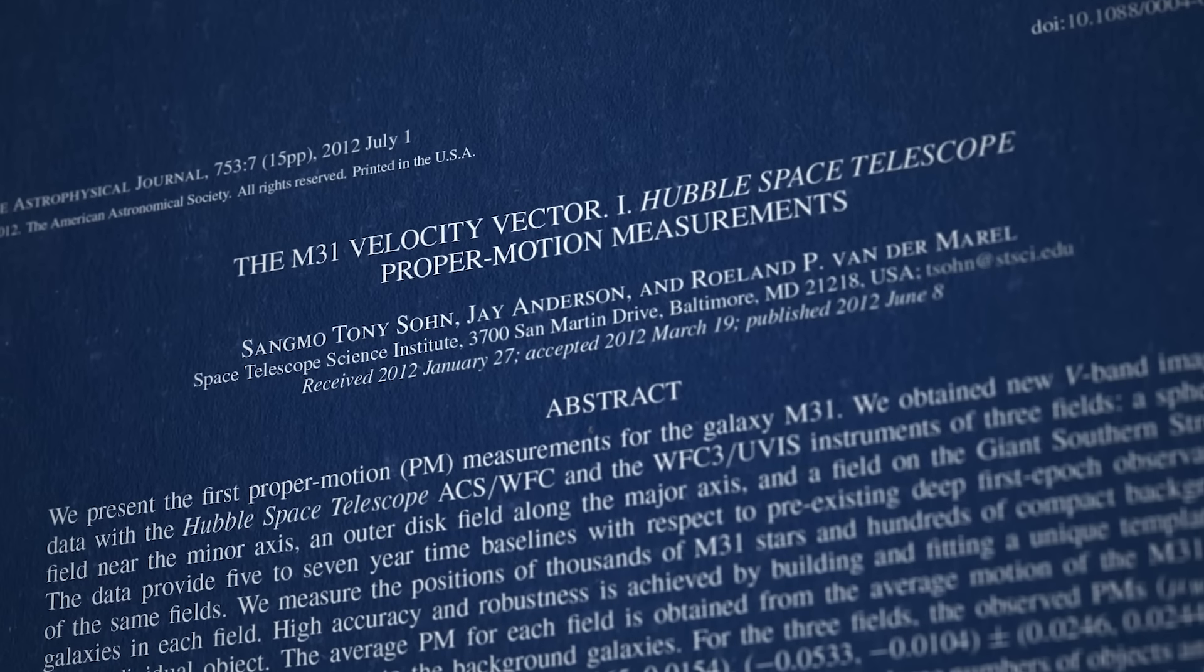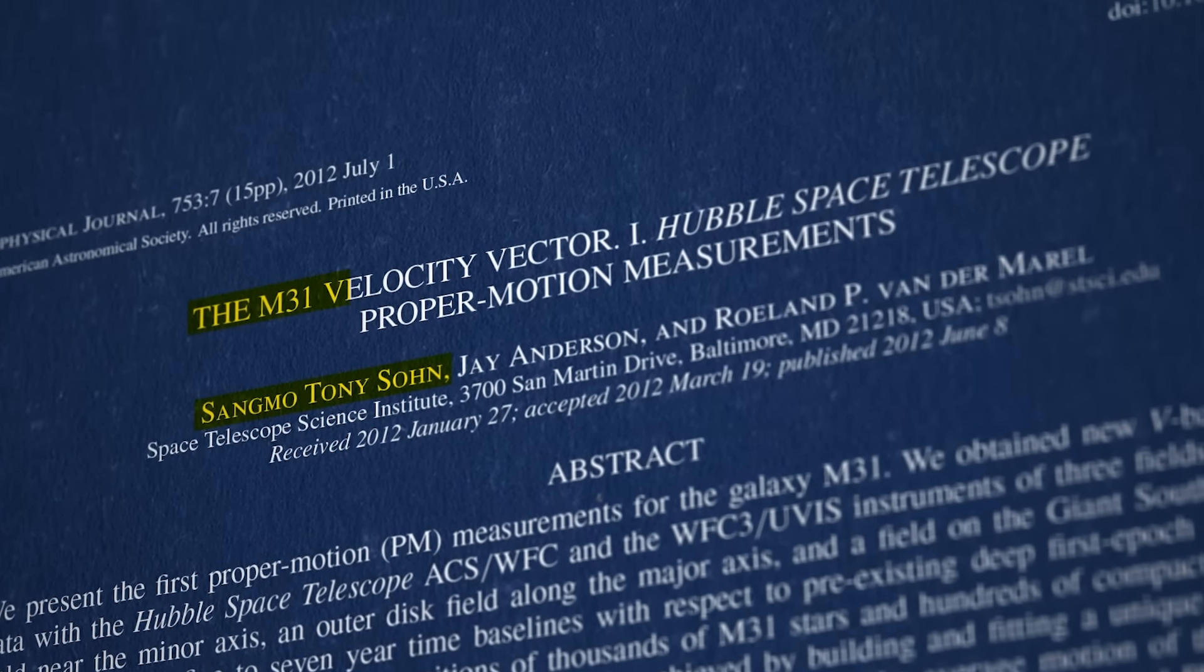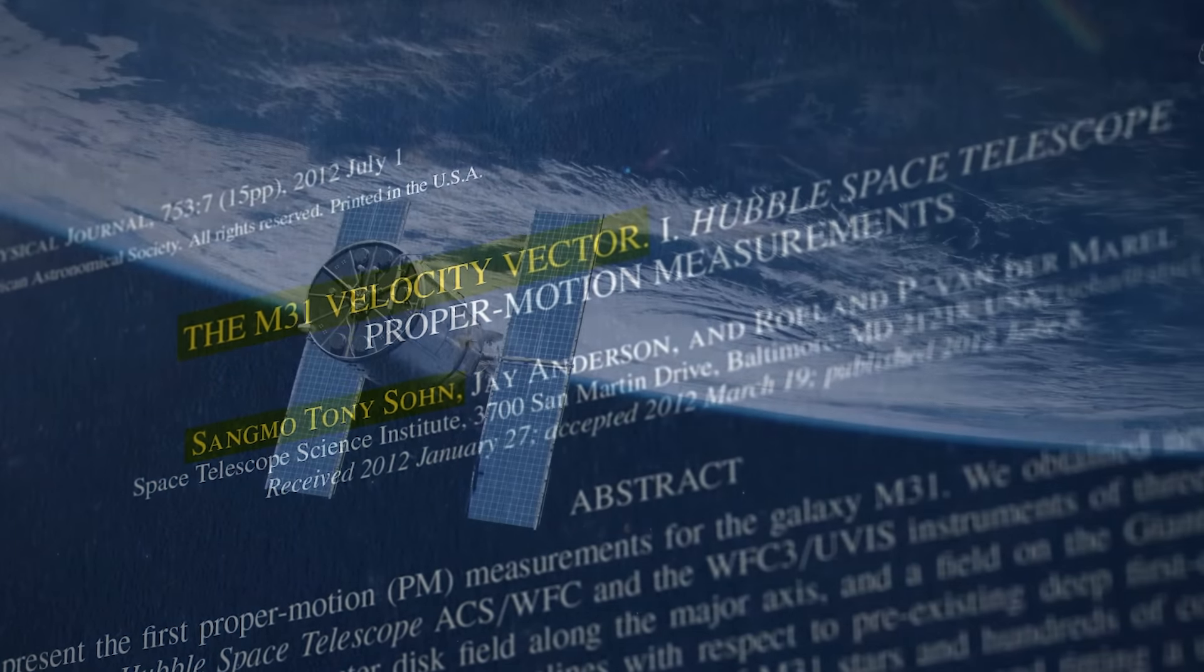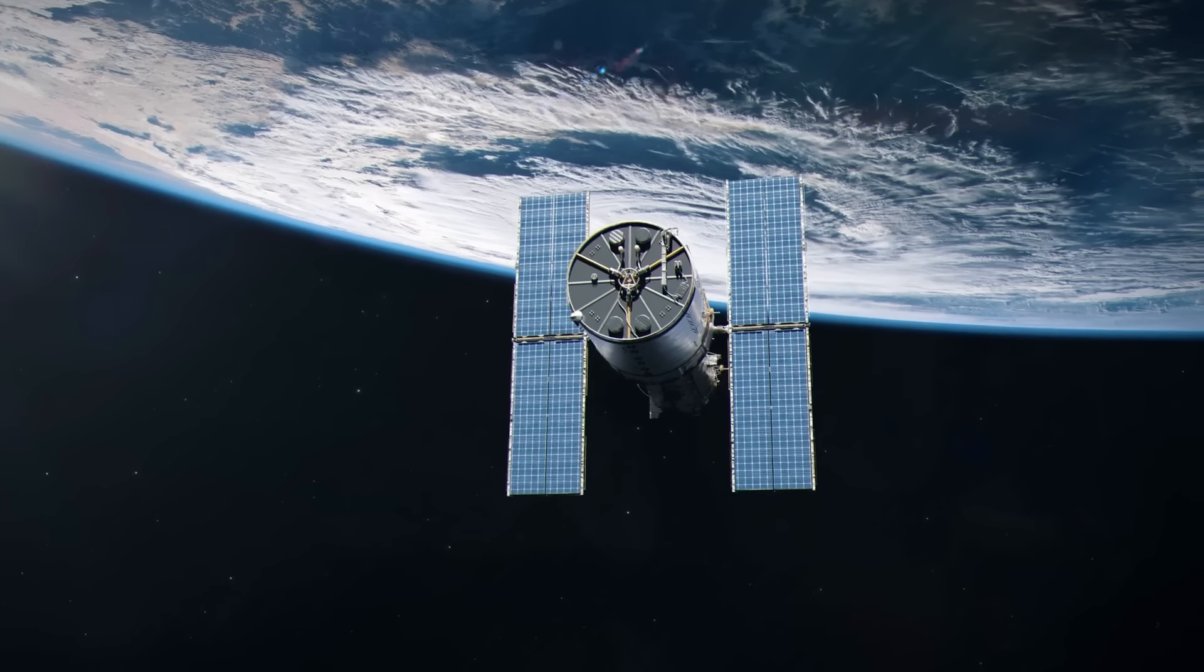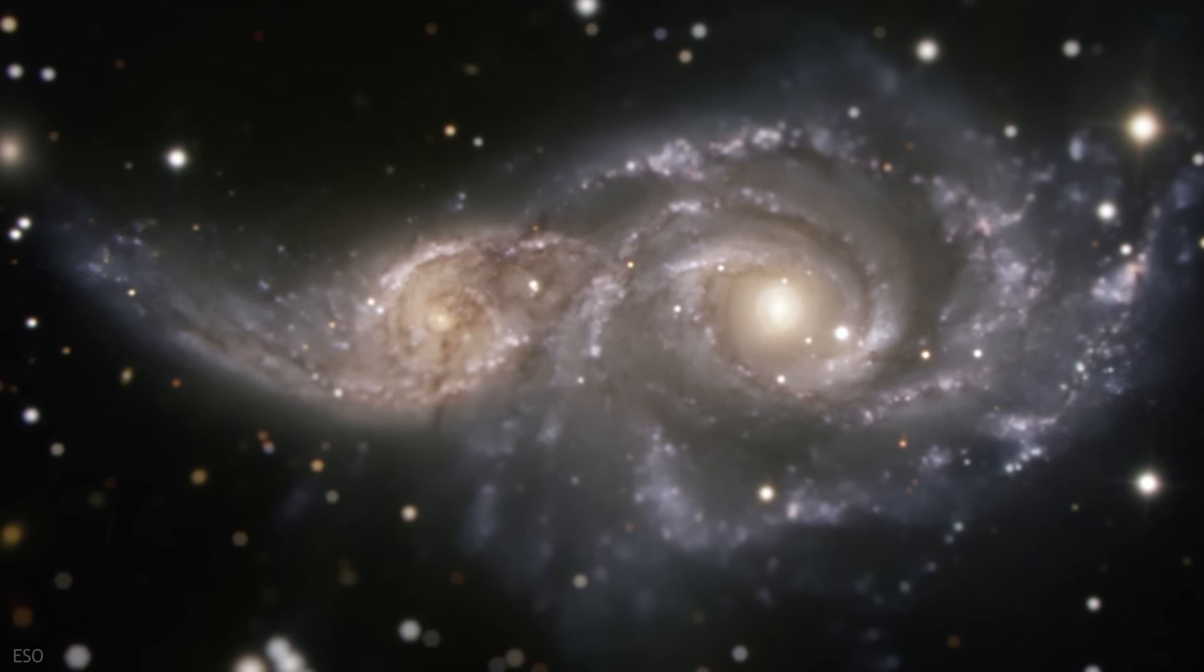Indeed, it wasn't until 2012, when a team of astronomers led by Sang Mo Son used the Hubble Space Telescope to measure the velocities of thousands of stars within Andromeda, that we had our first clear picture of its true three-dimensional course. And it was then that we realized we really were on a collision course.